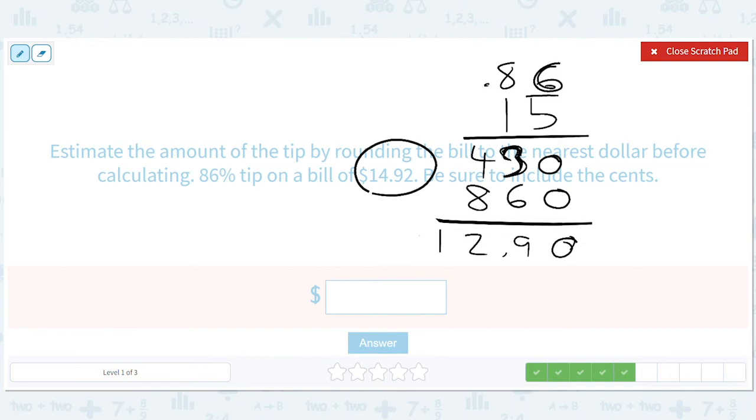So, we end up with 12.90. That feels close, right? That feels close to 14.92. Again, 86% is a huge tip. Right? So, that's okay. Yeah. 12.90.